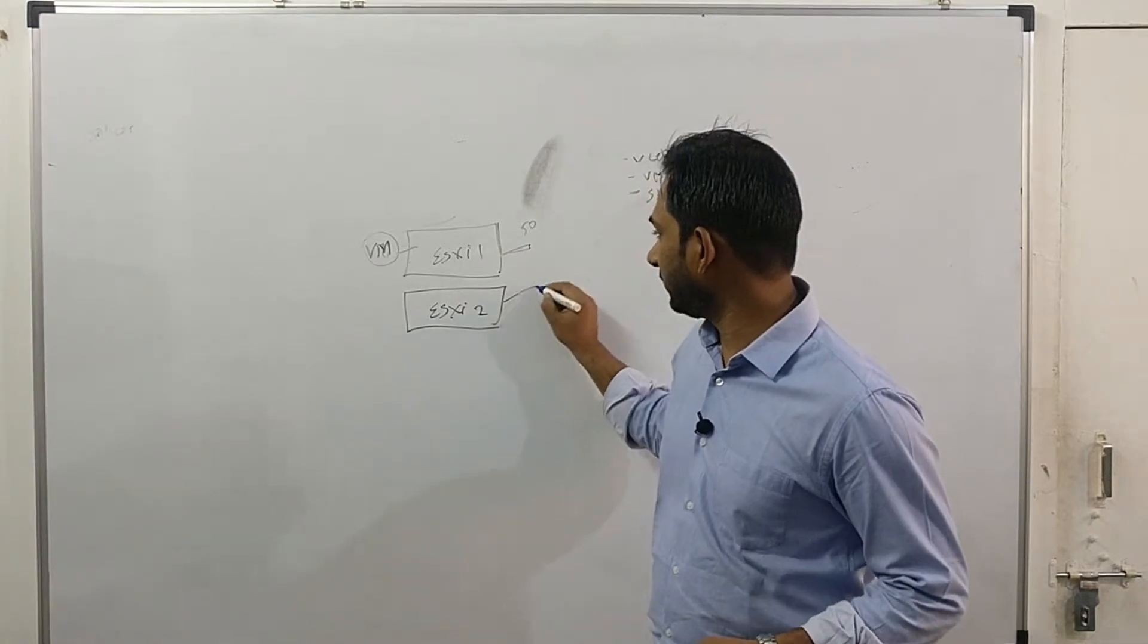So let's assume this ESXi host should have a management network. And this ESXi host should also have the management network. This ESXi host should have the vMotion. So I am just typing M which is management. Second is vMotion. So I am talking at vMotion. So these two important kernels should be available.